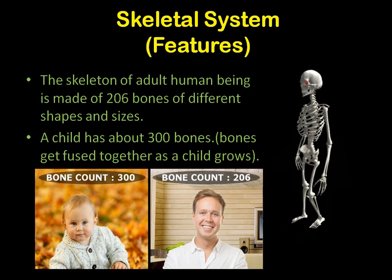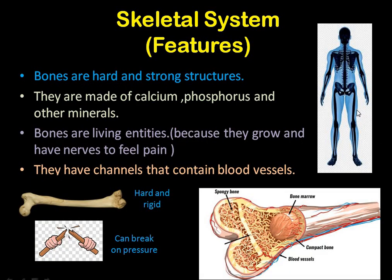A child has 300 small bones, while in an adult human being, when the bones are fused together, they are 206 in number. Now the bones are hard and strong structures. They are made of calcium, phosphorus, and some other minerals. Bones are living entities, meaning they can grow gradually from baby to adult. As you grow, the bones are also growing, and they have nerves inside them.